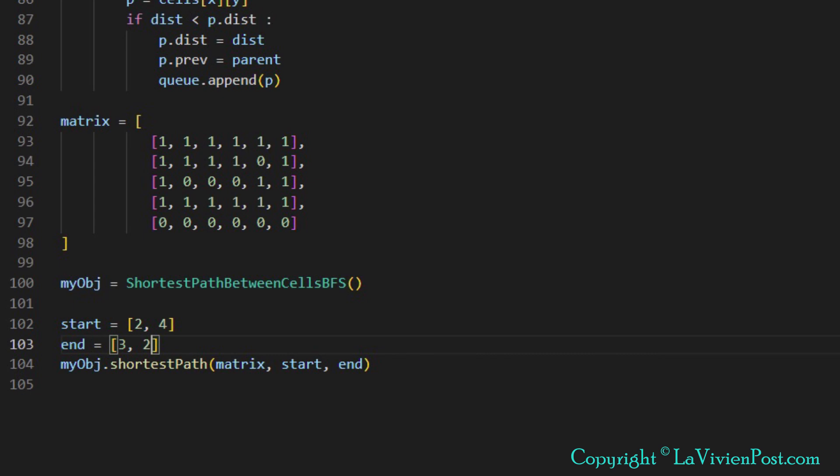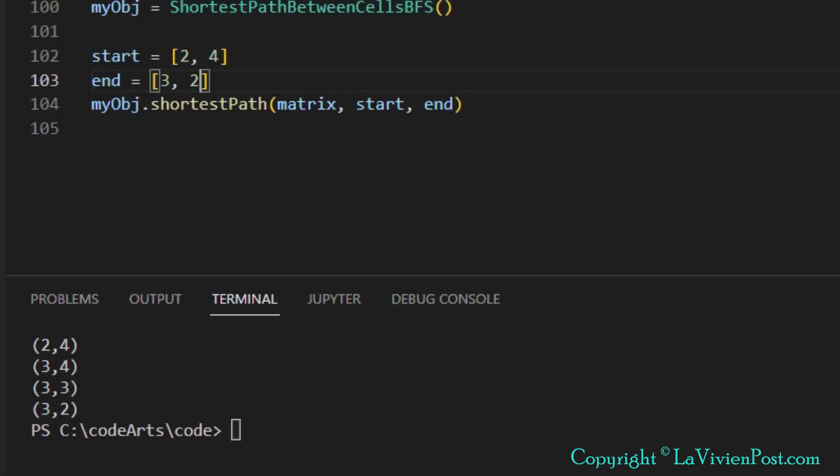Now we run the second case. The direction is from upper right to lower left. The start cell is 2,4 and the end cell is 3,2. BFS returns this.